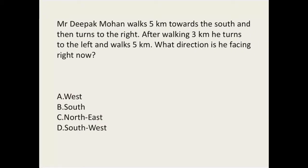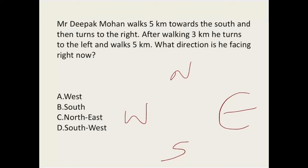Mr. Mohan walks five kilometers towards the south, then takes a left. After walking some distance, he turns left again and then turns right, followed by another left. Since he started facing south and took these turns, the answer is P — south. He is facing towards south.